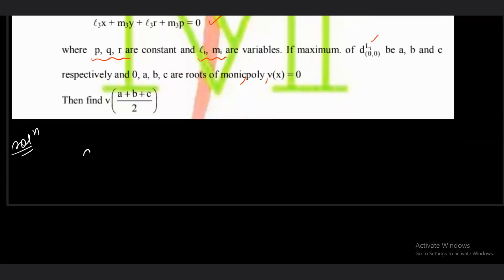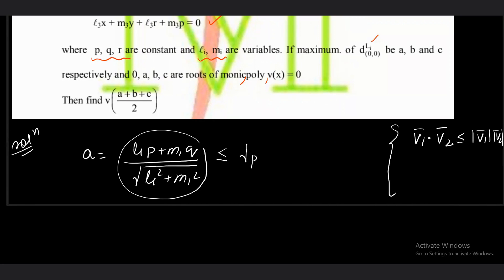I started with first of all a. a is the distance of point (0,0) from the very first line. So it turns out to be |l₁p + m₁q| / √(l₁² + m₁²). We have p, q are constant, l and m are variables. When you apply the Cauchy-Schwarz inequality, we will get that a is always less than or equals to √(p² + q²).